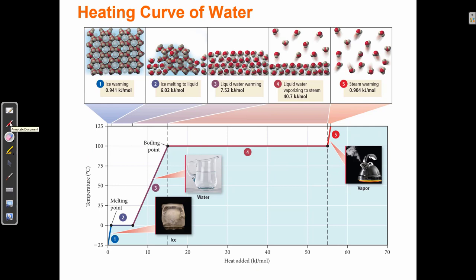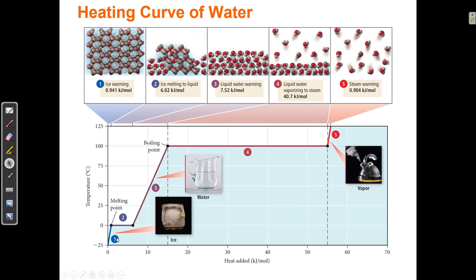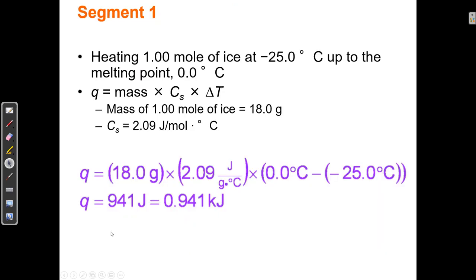Let's go through each section of the curve one at a time and see how the math works. Segment one is right here — I have solid ice at negative 25 degrees, and I'm heating that solid ice from negative 25 to zero. That's all I'm doing: heating one mole of ice at negative 25°C up to the melting point of zero degrees C.